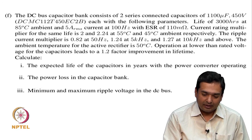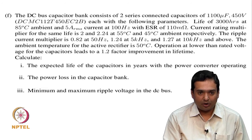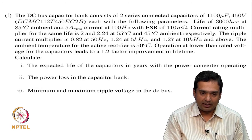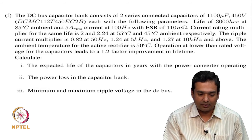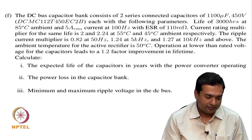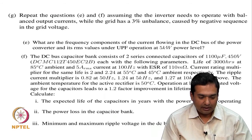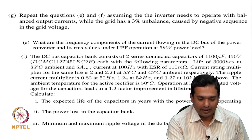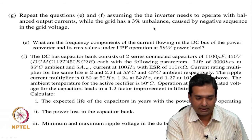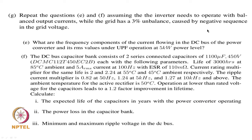We used those results to evaluate the lifetime of the capacitor, power loss in the capacitor bank, and the minimum and maximum voltage on the DC bus in terms of DC bus ripple. We did that assuming balanced conditions, looking at currents at 5 kilowatt power level and at full rated 10 kVA. In the next part of the problem, we are looking at when you have a 3 percent unbalance in the grid voltage and what would be the effect on the frequency components of the current.